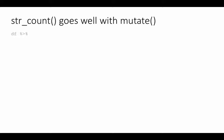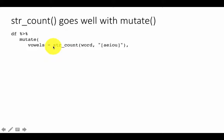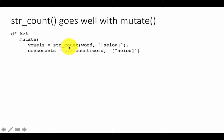`str_count` works well with `mutate`. Recall that `mutate` adds a column to a table. So in this example, we take `df` and say `mutate(vowels = str_count(word, '[aeiou]'), consonants = str_count(word, '[^aeiou]'))`. For every word we have its index `i`, and we're adding the number of vowels and the number of consonants — consonants being the opposite of the vowel pattern.